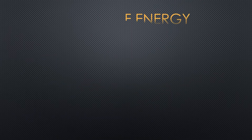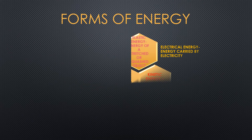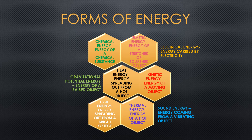Now let's discuss the different forms of energy. Chemical energy is the energy of a chemical substance. Elastic energy is the energy of a stretched or squashed object. Electrical energy is the energy carried by electricity. Gravitational potential energy is the energy of a raised object. Heat energy is the energy spreading out from a hot object.